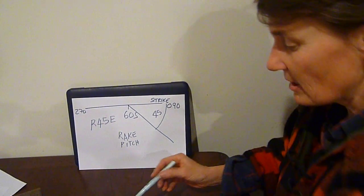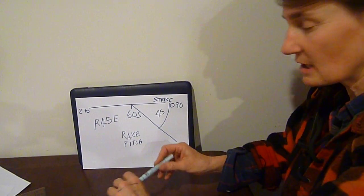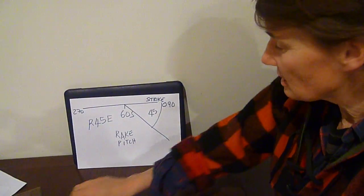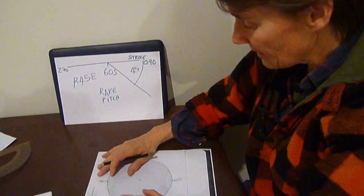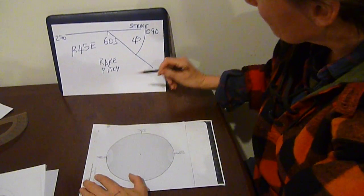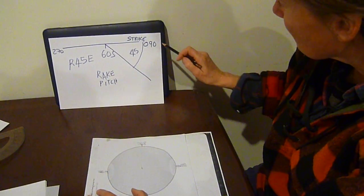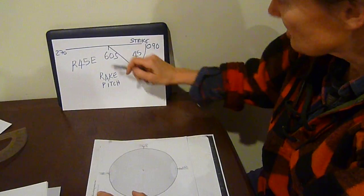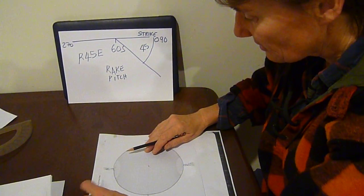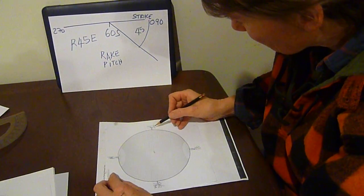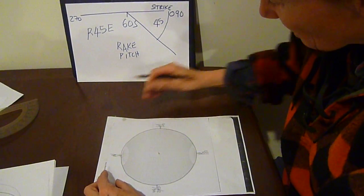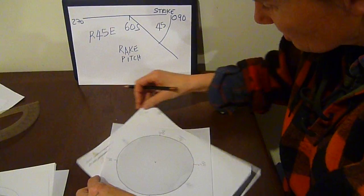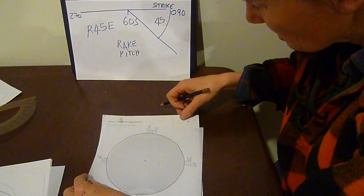Now, how would we plot that up on the stereo net? We have to plot the plane. So I'm going to plot the plane 090, 60 south. So happily, here's 090. Turn the AB line to it, which is where we set strike.